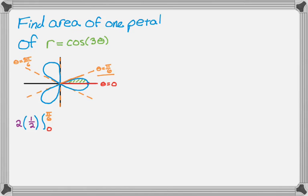And then it's r squared, so it'll be cosine of three theta. I'm going to square that, and then d theta. And I don't really want to do this by hand, so I'm going to just grab a calculator and calculate it, and I end up with pi over 12 for my area.